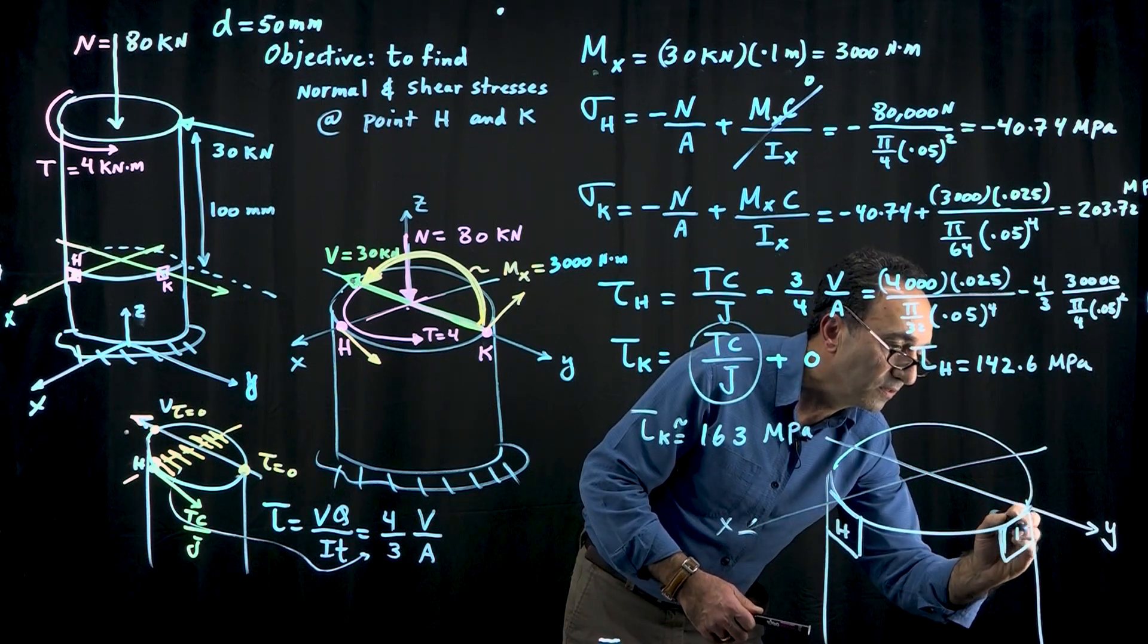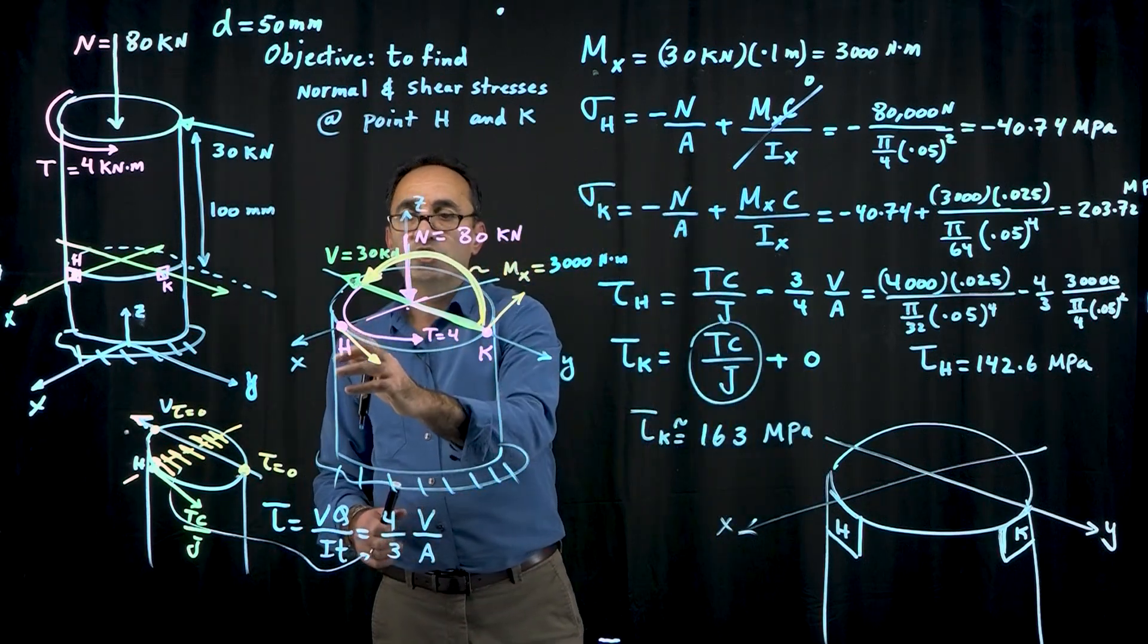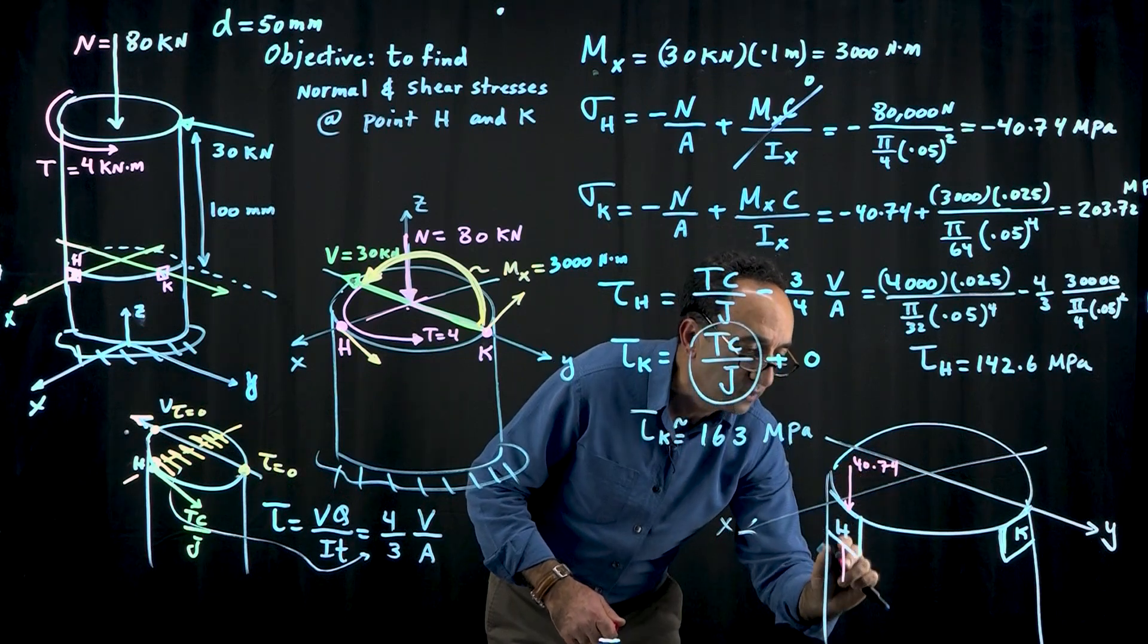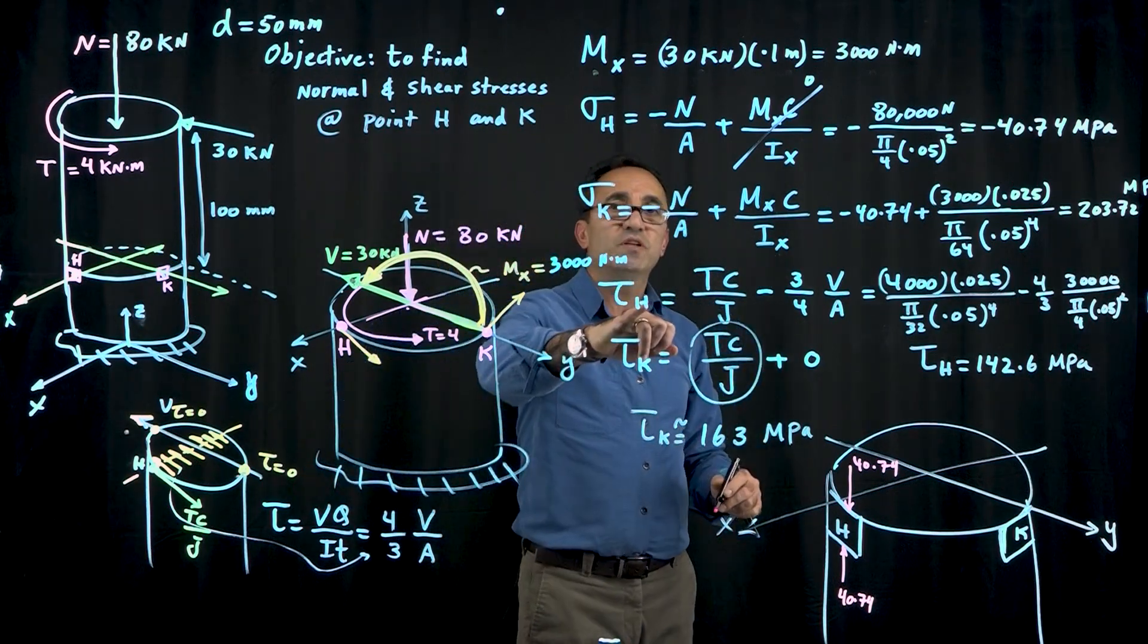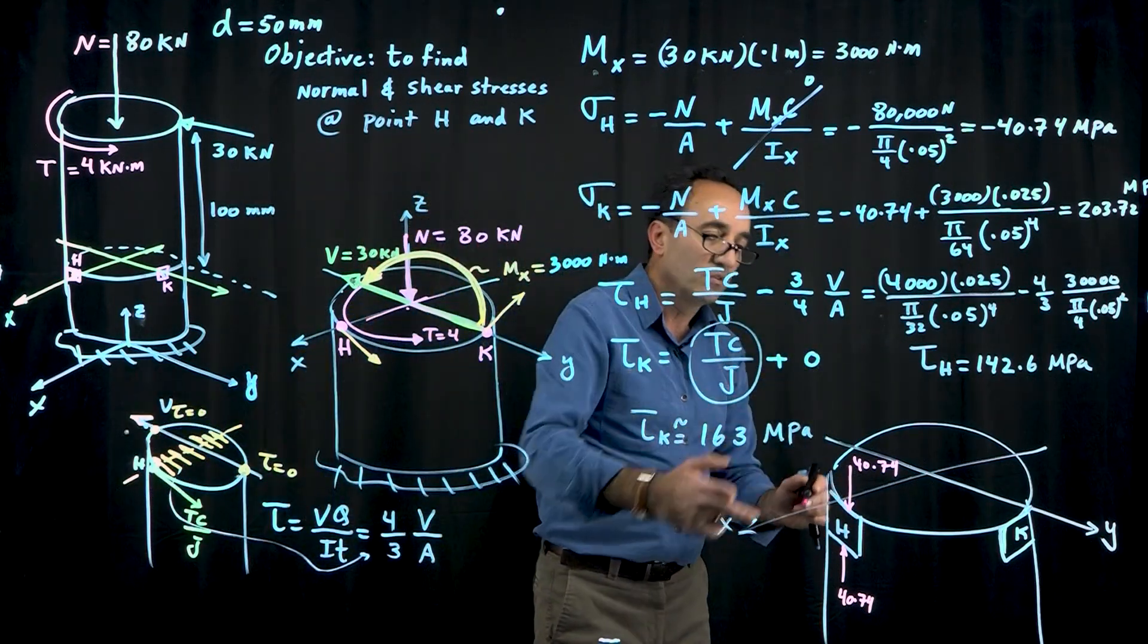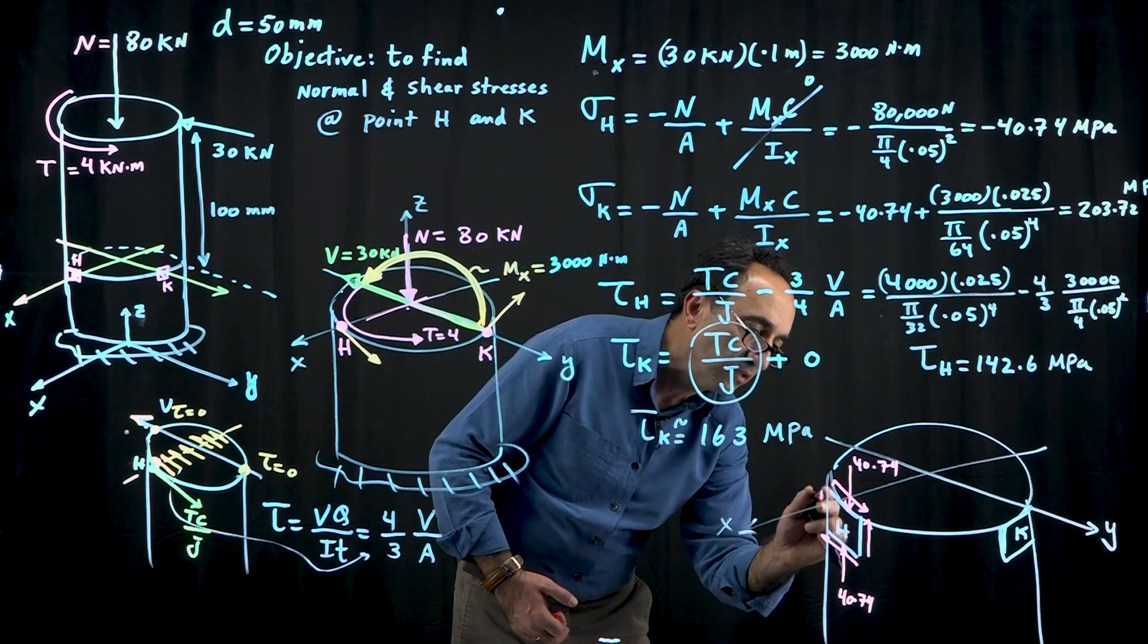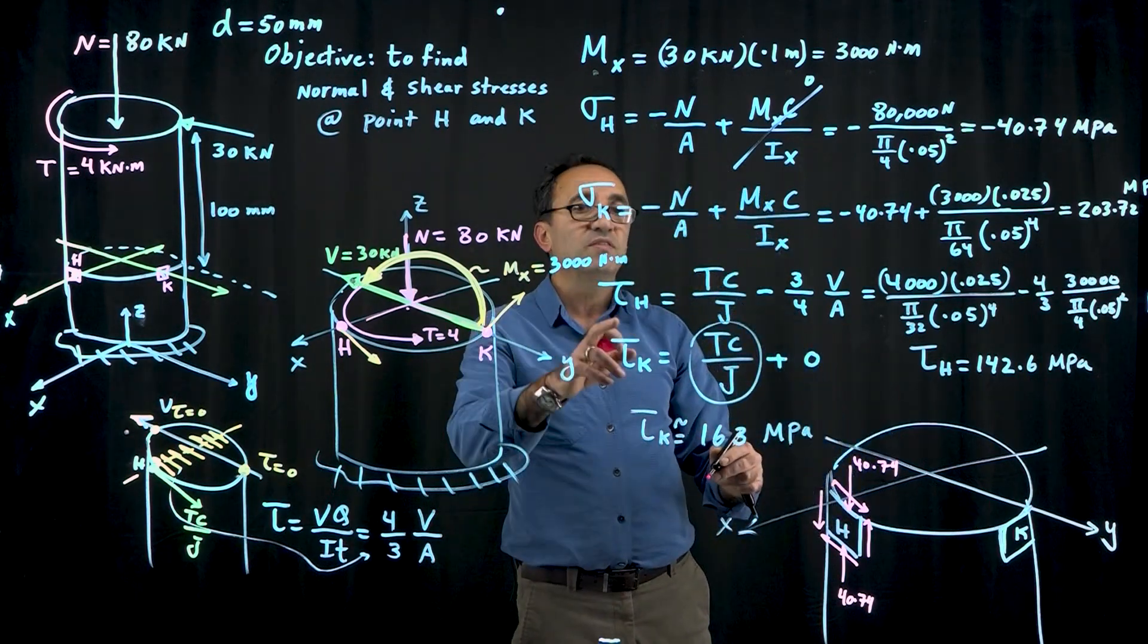The stress at H is only due to the normal stress, and that's compressive. So 40.74 goes right there, with one acting in the opposite direction. The shear stress at H is in this direction because TC over J dominates. Once you figure out the direction here, it has to be opposite on the other side, and shear stress must be equal on all four faces. This is 142.6 megapascals.